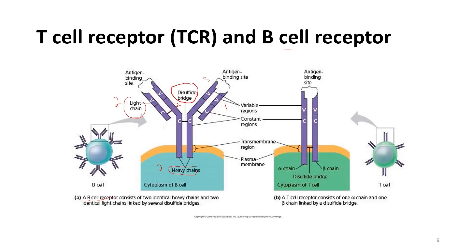These are the disulfide bonds, also called disulfide bridges. Both the light chains and heavy chains consist of two regions: V, the variable region, and C, the constant region. The variable region has a binding site called the antigen binding site, where the receptor will bind to a specific antigen — the concept is similar to a lock and key mechanism.